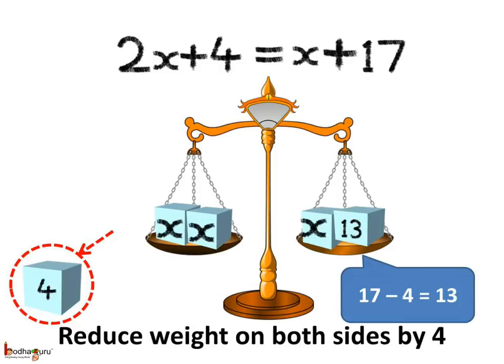First, let us take off 4 from both pans. So, on the left hand side pan we are left with 2x, and on the right hand side pan we have 17 minus 4, which is equal to 13.